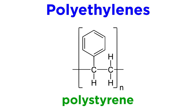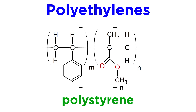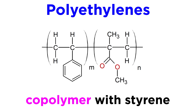If the substituent is a phenyl group — meaning a benzene ring — we get polystyrene. If styrene monomers are combined with some other monomer to make a copolymer, we can get a variety of other useful polymers with various applications.